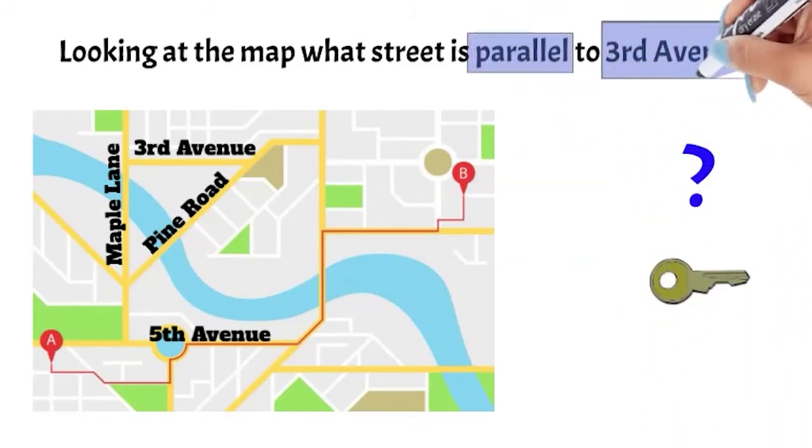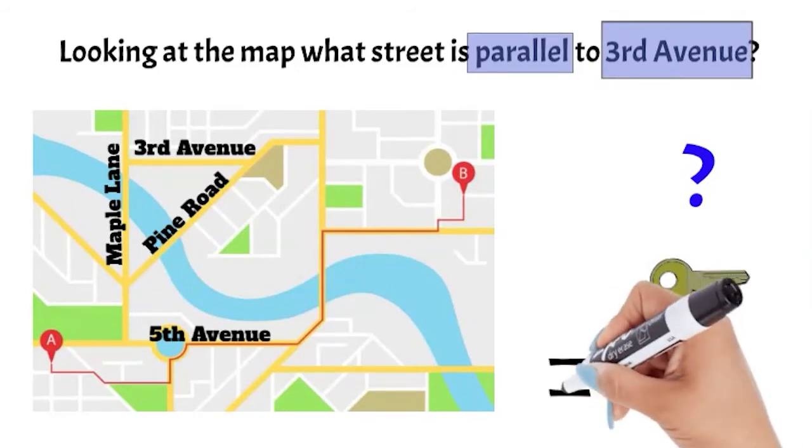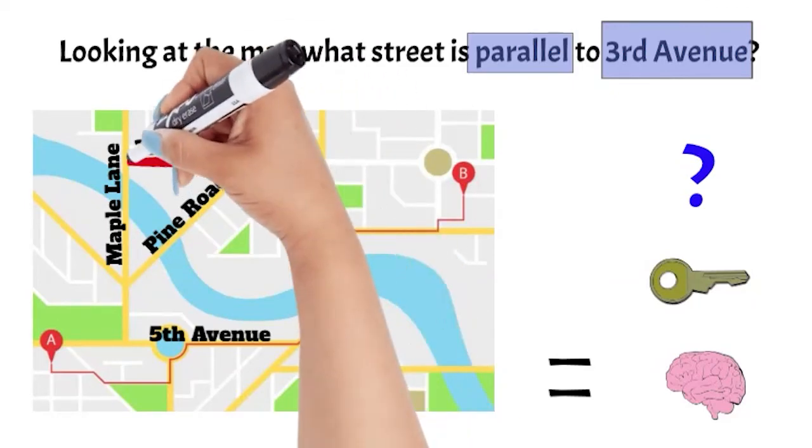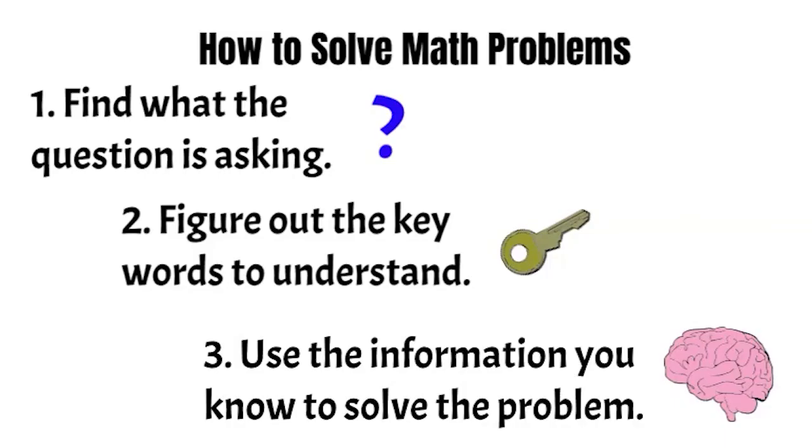I know parallel means the streets are never going to cross paths. I am going to look back at the map and find Third Avenue. What street on the map will never cross paths with Third Avenue? If you said Fifth Avenue, you are correct. These two streets are parallel.